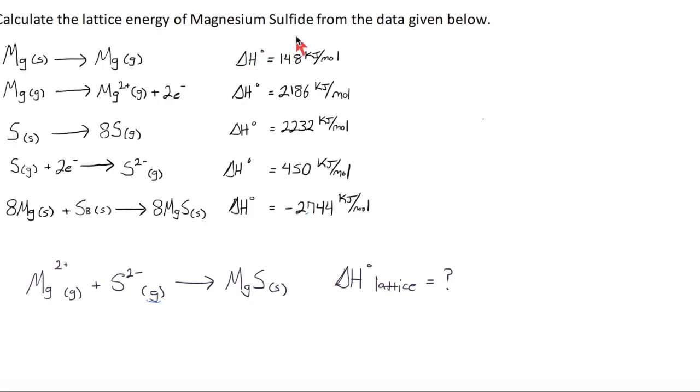Calculate the lattice energy of magnesium sulfide from the data given below. Lattice energy is going to be the energy released when magnesium cations and sulfur anions in the gaseous form come together to form solid magnesium sulfide, an ionic compound.